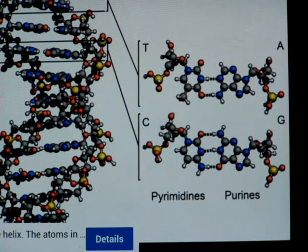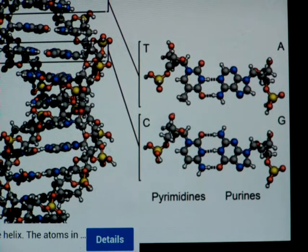Now as we know the DNA molecule is made up of the A's, the T's, the C's and the G's.